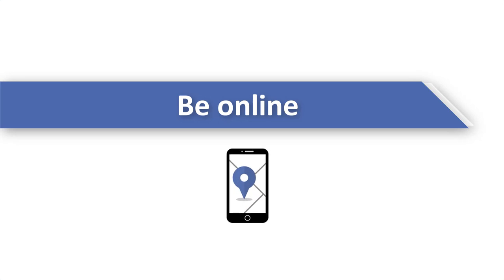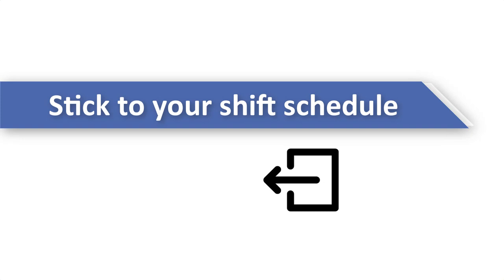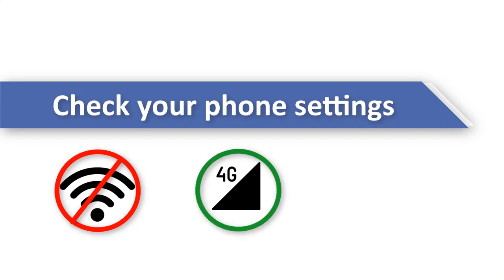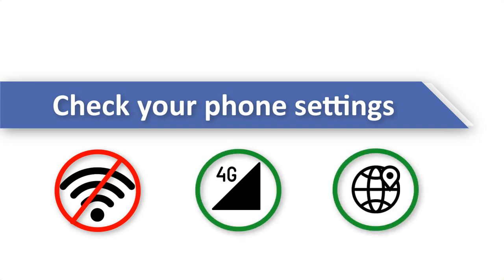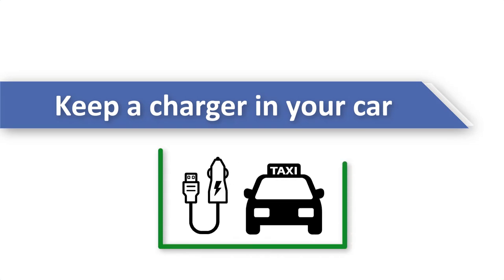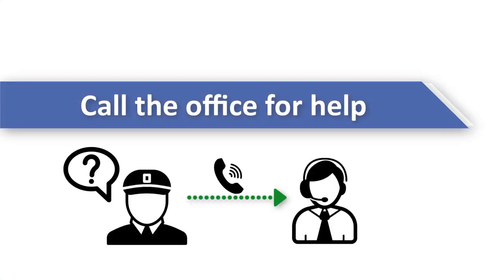Finally, there are just some things to remember when using the app. To be able to do jobs, the Driver App must be kept open and your status must be online. Log in at the beginning of your shift and log off when your shift is over so the system doesn't continue to send you jobs. Keep Wi-Fi connection off and mobile data on. GPS must be switched on. Keep your device connected to a car charger at all times as the app is energy consuming. If there is ever a problem with logging in or any other issue you cannot deal with, call the office for help.